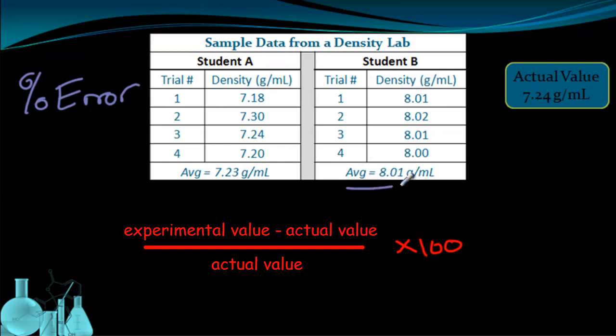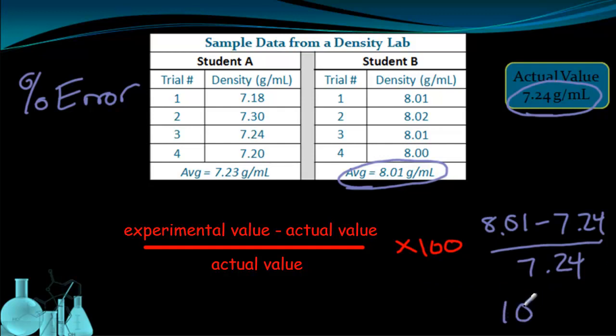Student B's experimental value is 8.01 grams per milliliter. The actual value is 7.24 grams per milliliter. So we're going to just plug this in: 8.01 minus 7.24, divided again by the actual value, 7.24, and then all that multiplied by 100. And this is going to give us a percent error of 10.6%. So student B was off by 10.6%. That's the degree of error in student B's results.